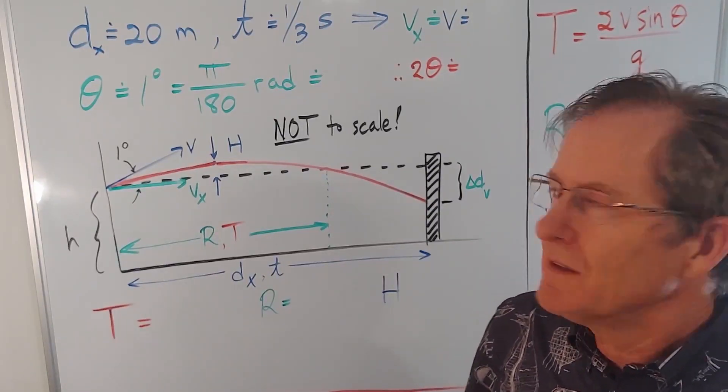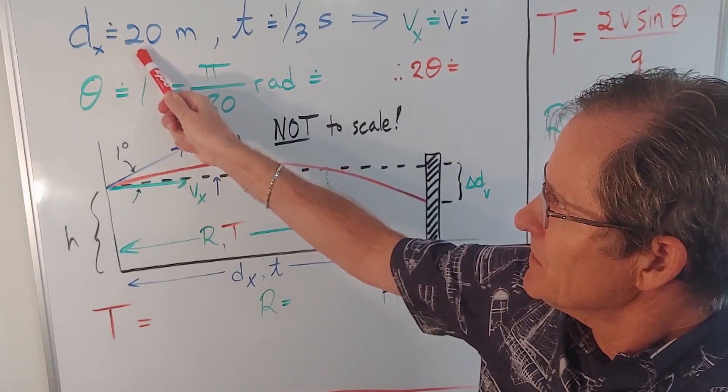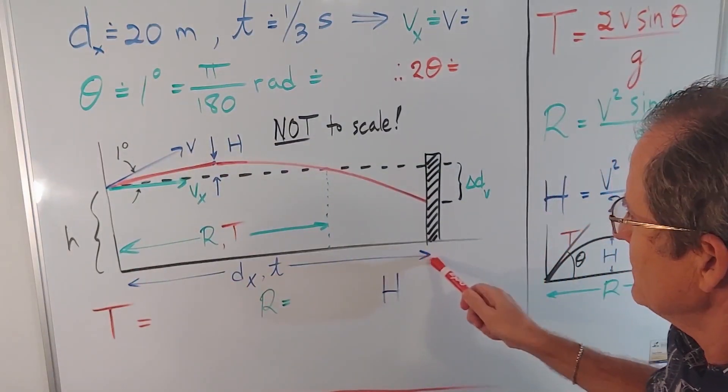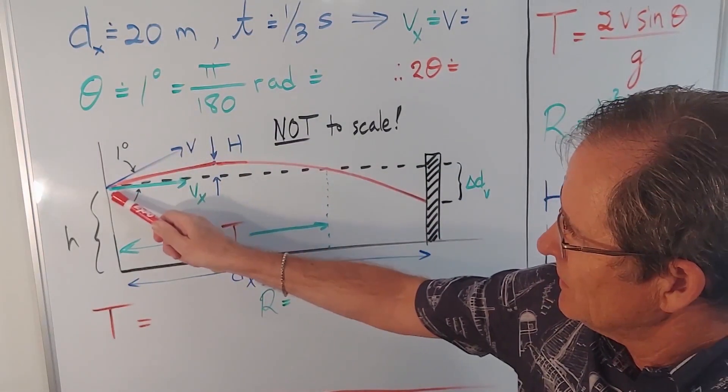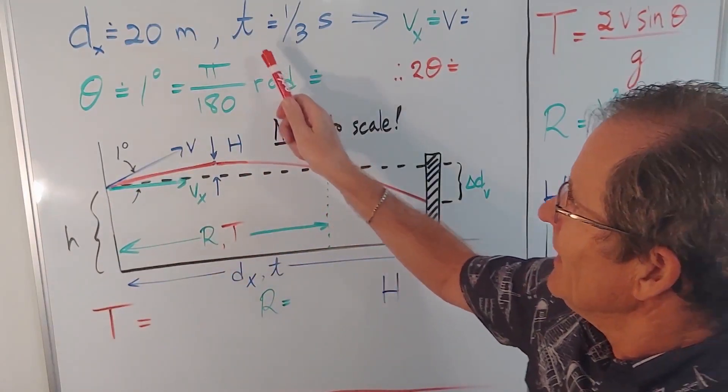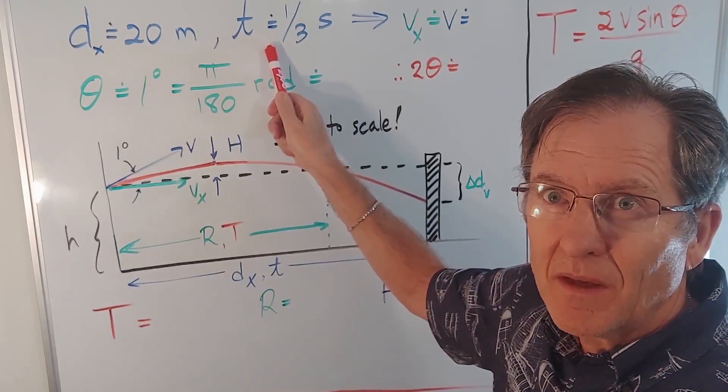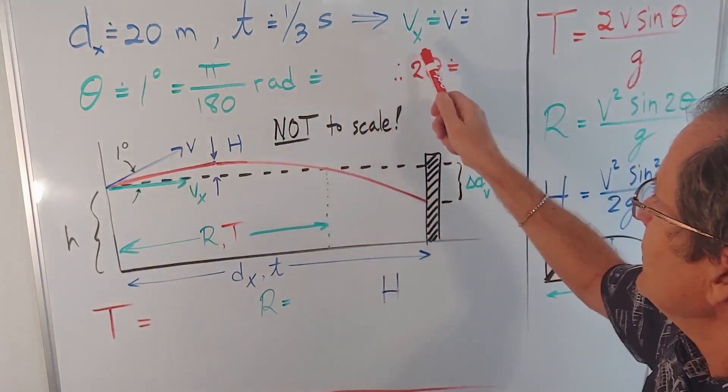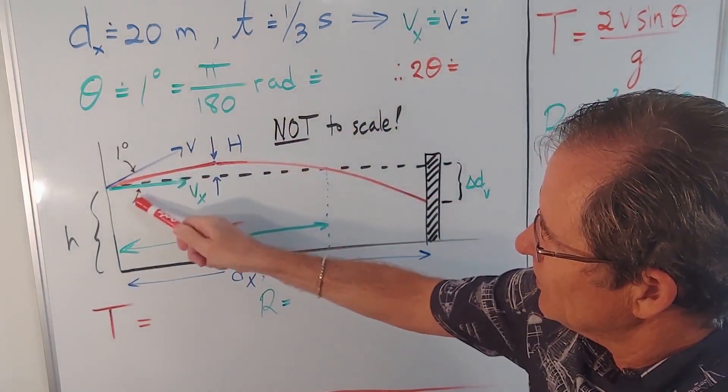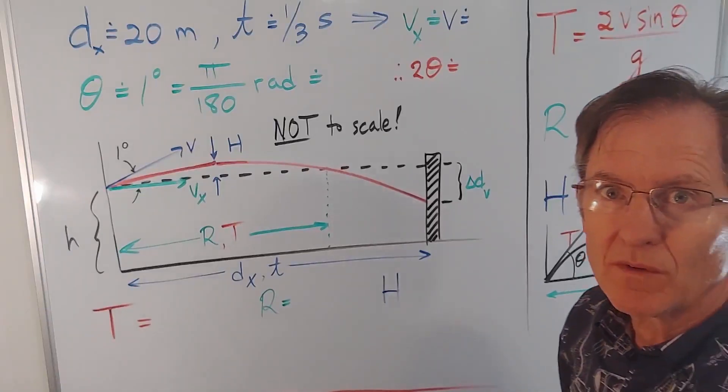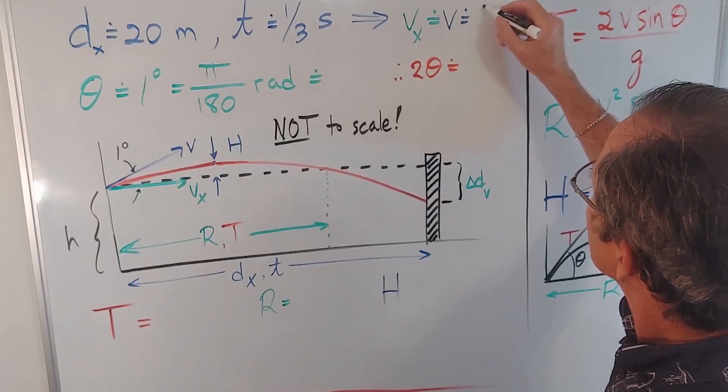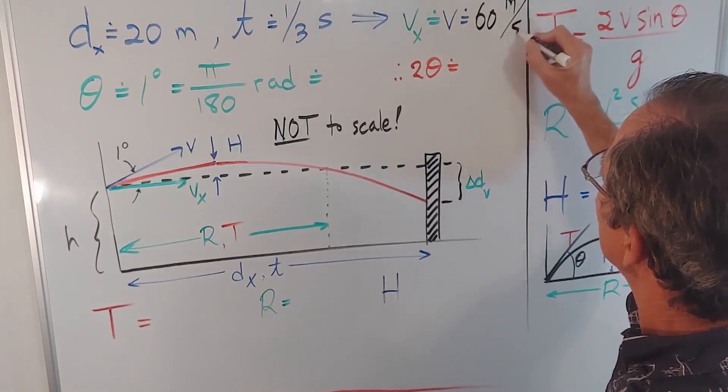I estimate that the distance to the target was about 20 meters. On the diagram down here, that's represented by this distance. Here's the target. That's where the arrow was launched. This is not to scale. And I think the time was about a third of a second. So the horizontal speed on average, which is pretty much the launch speed because this angle is only one degree here, would be distance over time, approximately 20 divided by a third, or 60 meters per second.